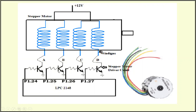In my example, we are going to use P1.24 to control winding A, P1.25 for winding B, P1.26 to control winding C, and P1.27 to control winding D. Therefore we have to send data from the LPC 2148 microcontroller to activate and enable each winding. We have to configure P1.24 to P1.27 as output using the IO direction register. Initially, we have to make P1.24, 25, 26, and 27 low.